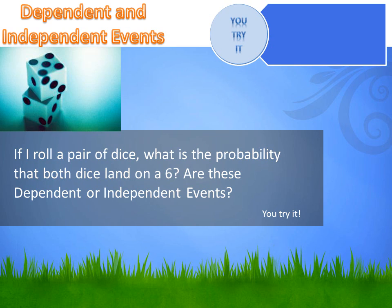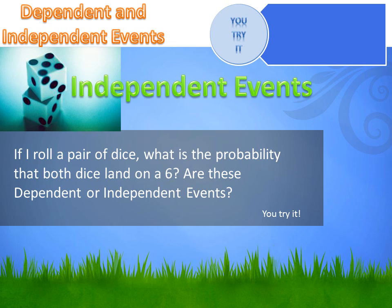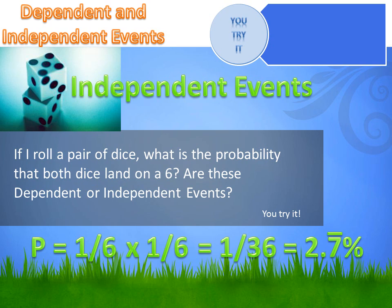You're going to roll a pair of dice. What's the probability that both dice will land on a six? Are these dependent or independent events? Will what I roll on the first die in any way impact where the second die lands? No — they're independent events. So my calculation is the probability of rolling a six on the first die times the probability of rolling a six on the second die. Since there are six sides, the probability of a six is one in six. One-sixth times one-sixth equals one in 36, or 2.7 repeating percent.